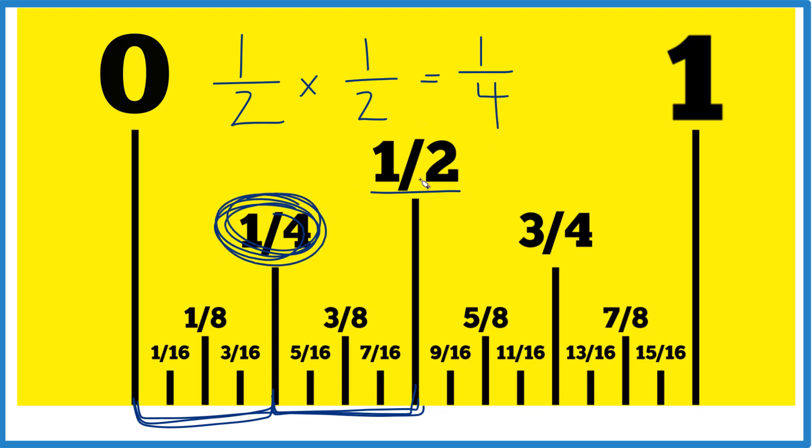So one half of one half, that's one fourth. You could say one half divided by two, that's one fourth, or one half times one half equals one fourth. And you can see why that works here by adding up these fourths.